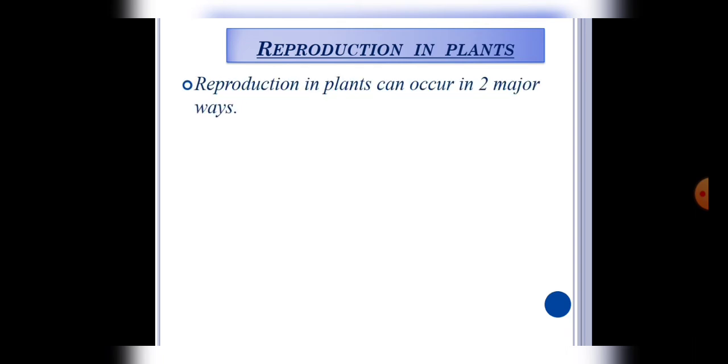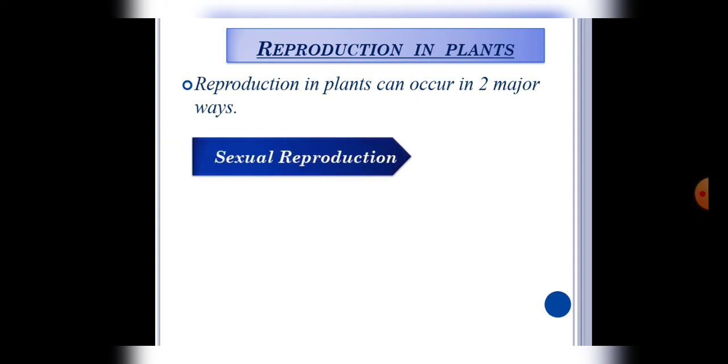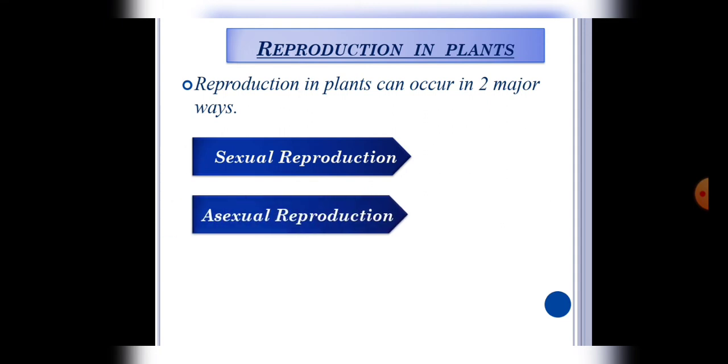Basically plants have two ways of reproduction. First is sexual reproduction and second is asexual reproduction. So now let's talk about these one by one.